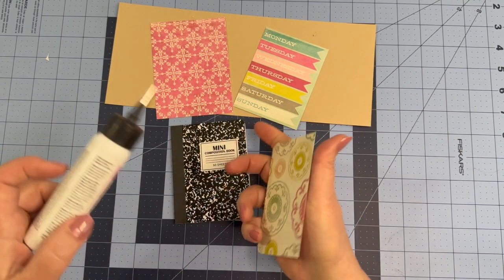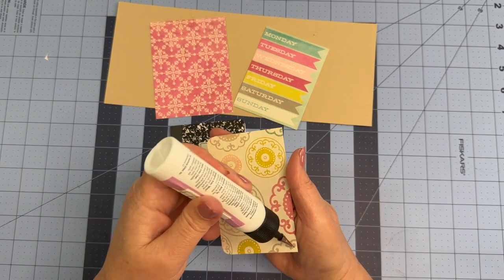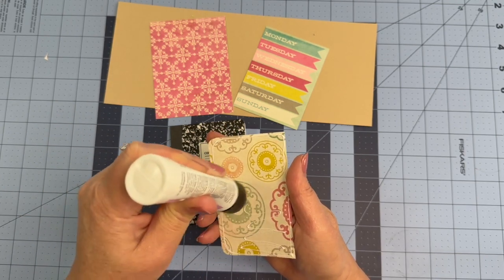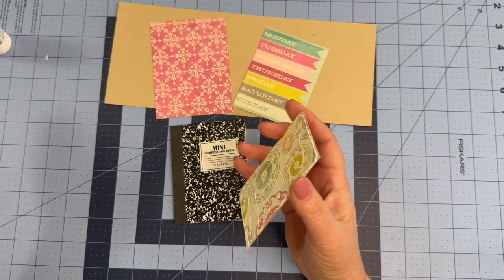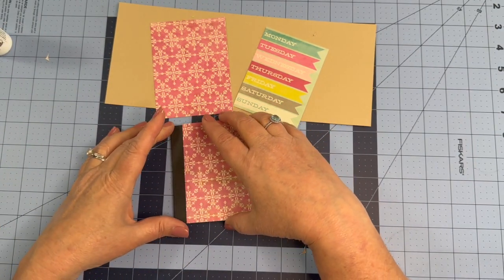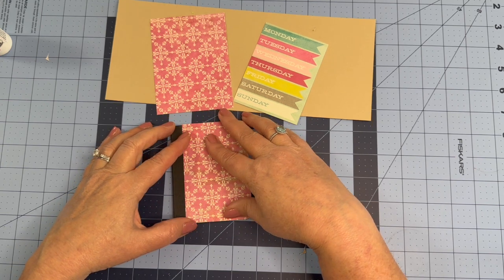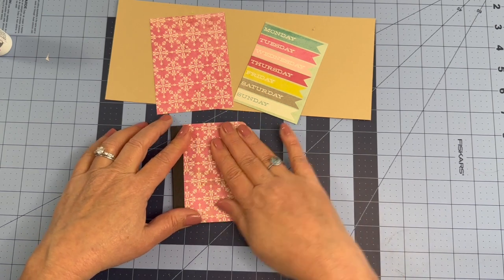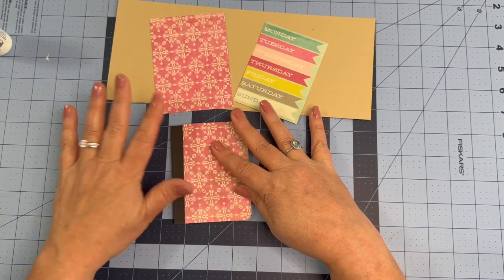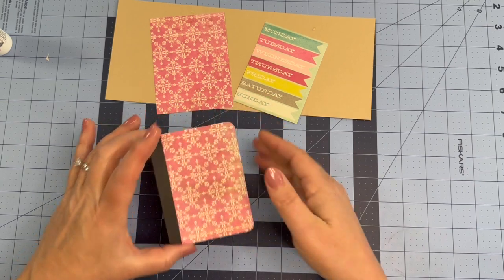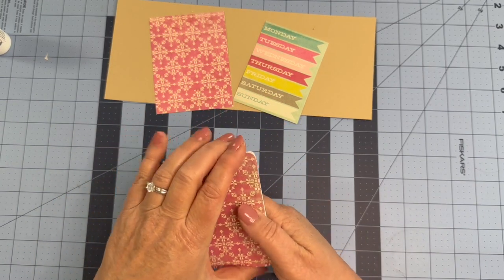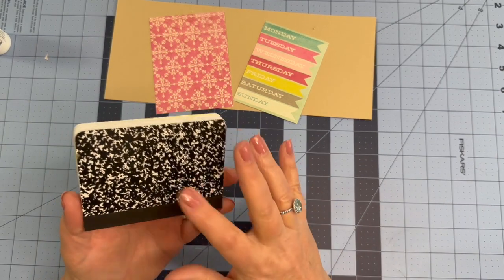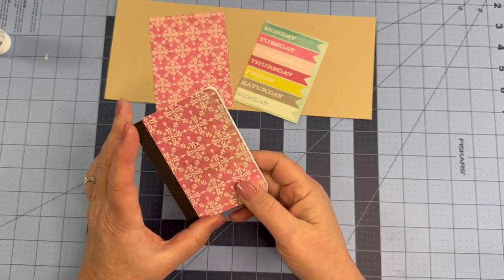Let's get some glue. There we go. Perfect. All right, let's set that aside. We'll let the top of this dry. I'm not going to do the back because I just don't think that I need to. It's not going to show, so I'm not going to do it.